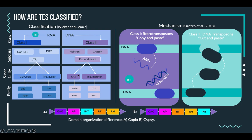Within the families they can also be classified according to their domain organization. For example, here we have Copia and Gypsy and some differences among them.